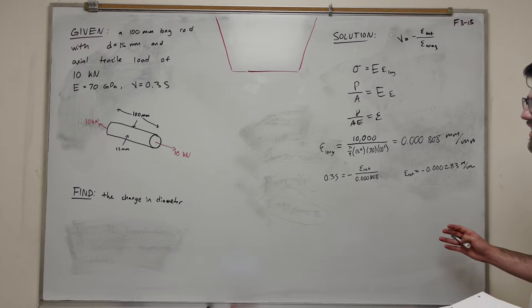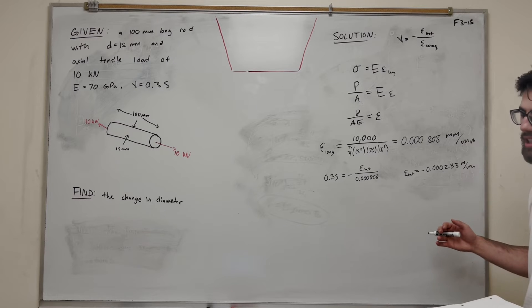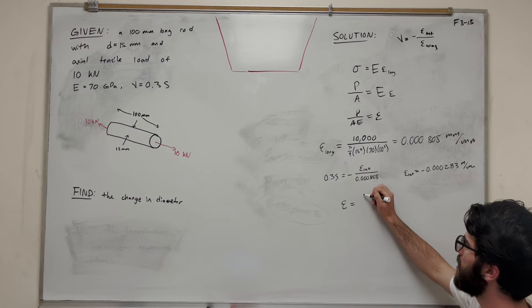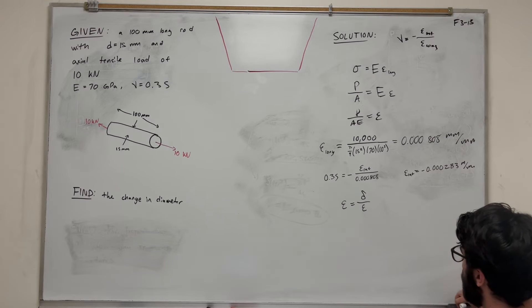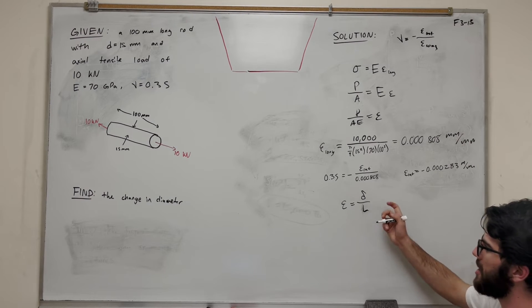Okay, so that's not the answer yet. That's our epsilon, that's our strain, the normal strain, but normal strain isn't the answer. The equation for normal strain is equal to change over length original. In this case, length is diameter, and delta is the change in diameter. So let's plug that in.